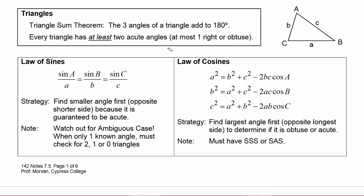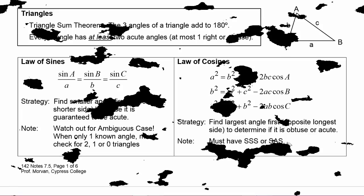To use the law of cosines, you must have one of two special cases: side-side-side, meaning you know all three sides, or side-angle-side, meaning you have two sides and their included angle.